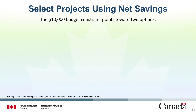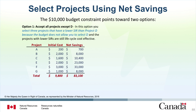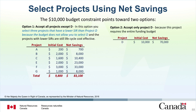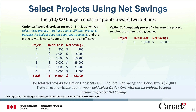It would be preferable to undertake all seven projects if funding is available. However, the $10,000 budget constraint points toward two options. For option one, select all projects except Project D — this selects three projects with a lower SIR than Project D, because the budget does not allow Project D and the projects with lower SIRs are still lifecycle cost-effective. For option two, select only Project D, because this project requires the entire funding budget. The total net savings for option one is $83,100. The total net savings for option two is $70,000. From an economic standpoint, you would select option one with the six projects because it leads to greater net savings.